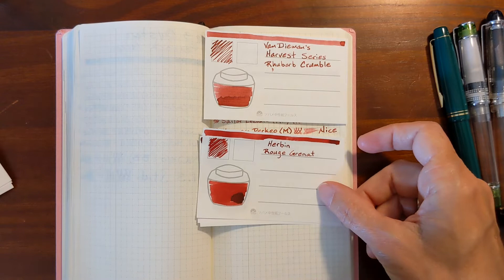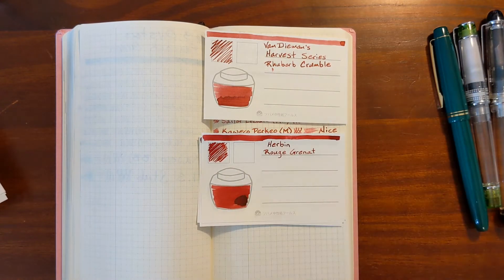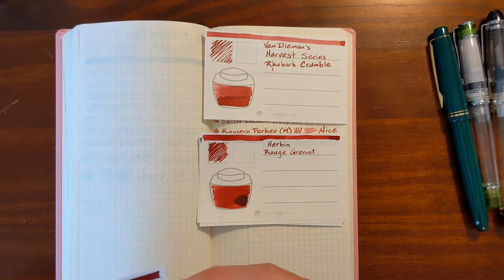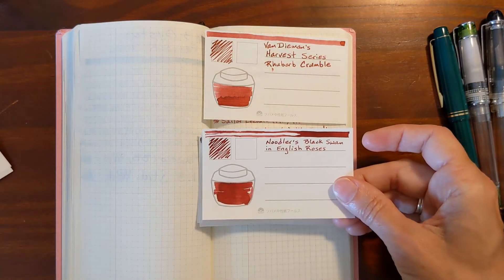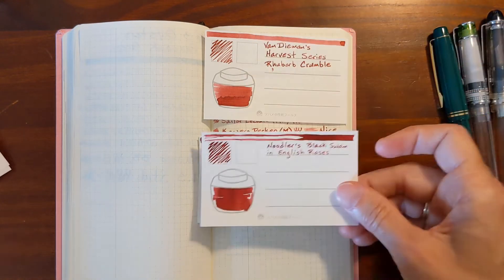Rouge Grenat is a little more red, but similar. Performs similarly in fine nibs, or looks similar in fine nibs. Noodler's Black Swan in English Roses, similar, but a little more saturated.